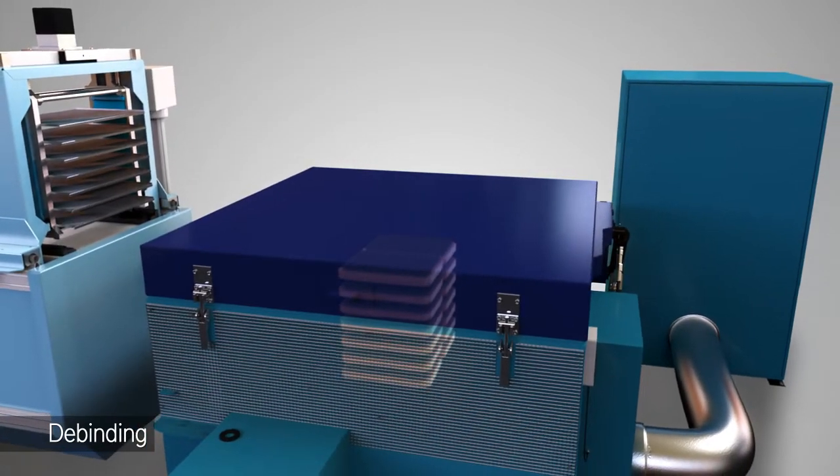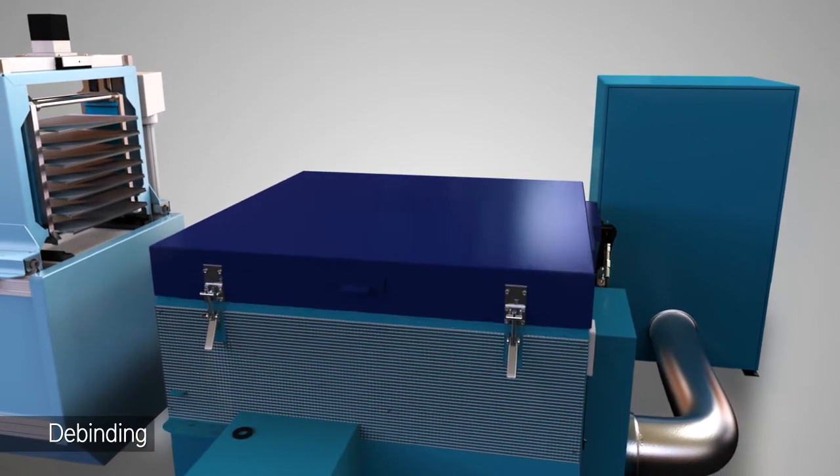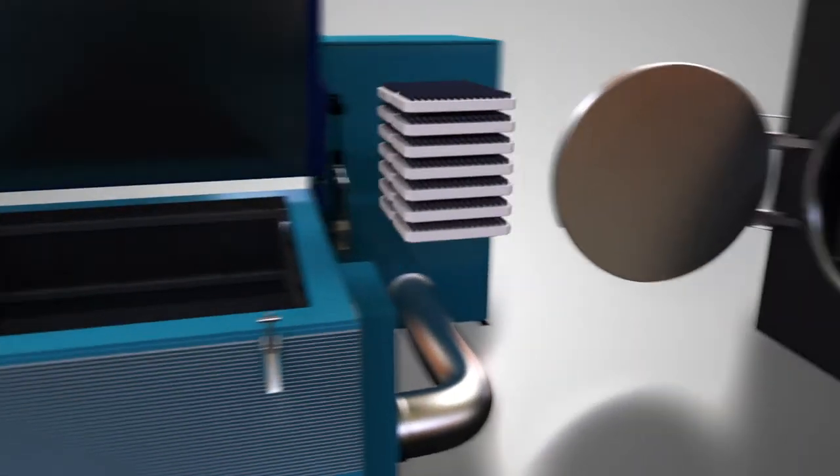When the objects come out of this furnace they are fragile and porous and are referred to as brown parts.